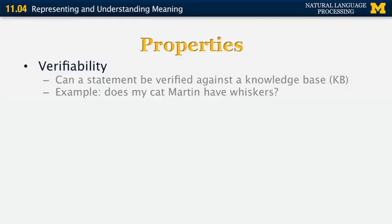So some of the properties of semantic representation are listed here. The first one is verifiability, so it should be possible to determine if a certain statement is true against a knowledge base. So for example, does my cat Martin have whiskers? In the database we can have a statement that says that it does, or maybe it says that all cats have whiskers and Martin is a cat. In both of those cases, we can verify the truth value of this particular statement.